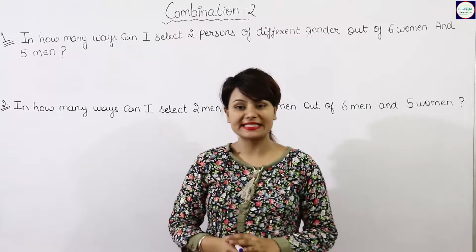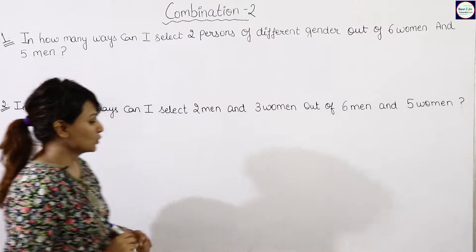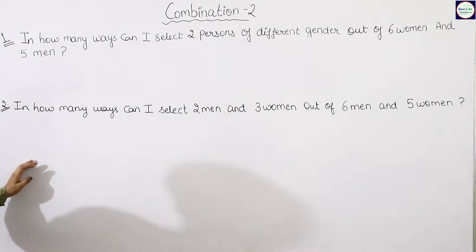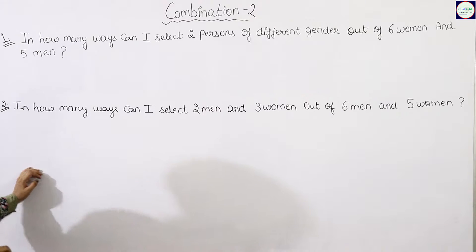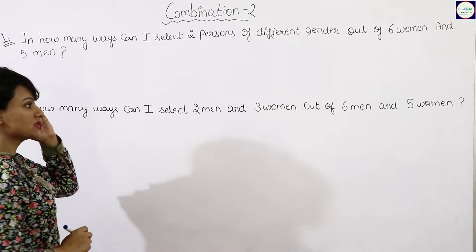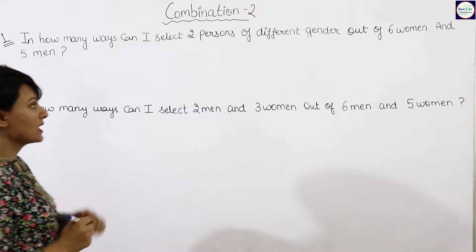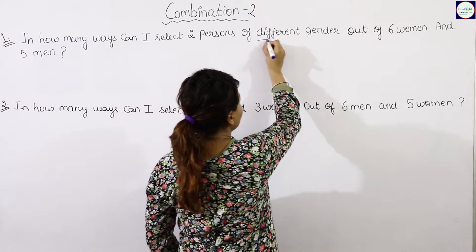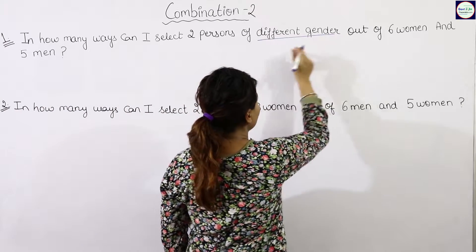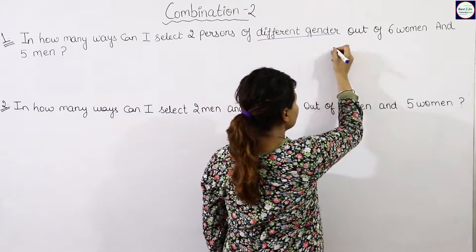Hello friends, today we will study the second part of combination. Question number one: in how many ways can I select two persons of different gender out of six women and five men? In the first part, we studied the same gender; now we will study the different gender.